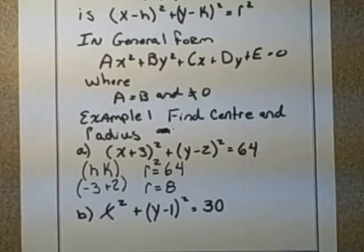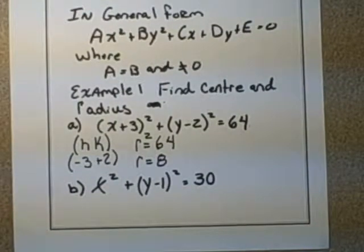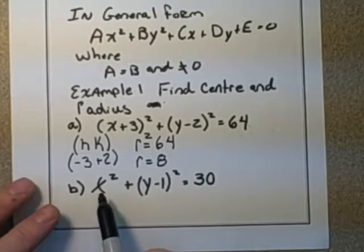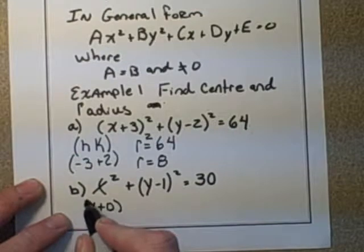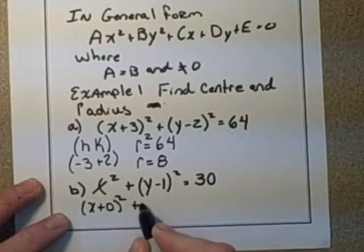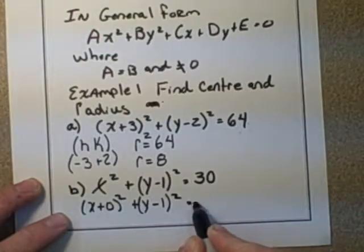Okay, similarly along with that in our second part of the equation, notice when you have no number with the x. Well, if you have no number with the x², that's just like saying (x+0)² + (y-1)² = 30.